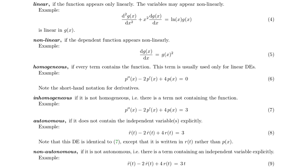If you have a linear differential equation, another useful distinction is between homogeneous and inhomogeneous. Here you see two linear differential equations — note that I use the shorthand notation for derivatives, namely p double-dash or p dash for the second and first derivative respectively. These are almost identical and differ only in the three here. The homogeneous differential equation only has terms with p in it or with a function in it.